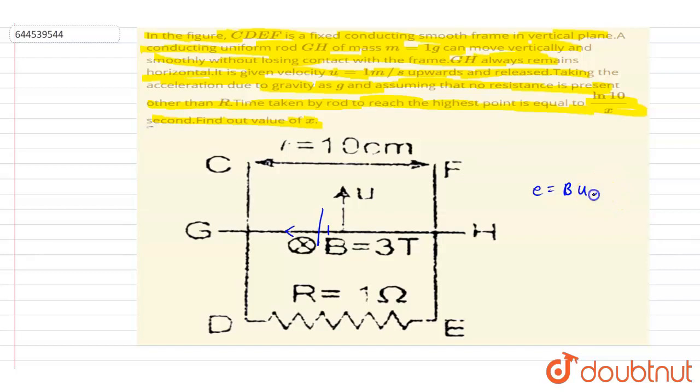u times l, right? So the induced current will be... So if I write down the force on it, force on it will be BiL. So if you see here, the current is i, magnetic field is in downward direction...